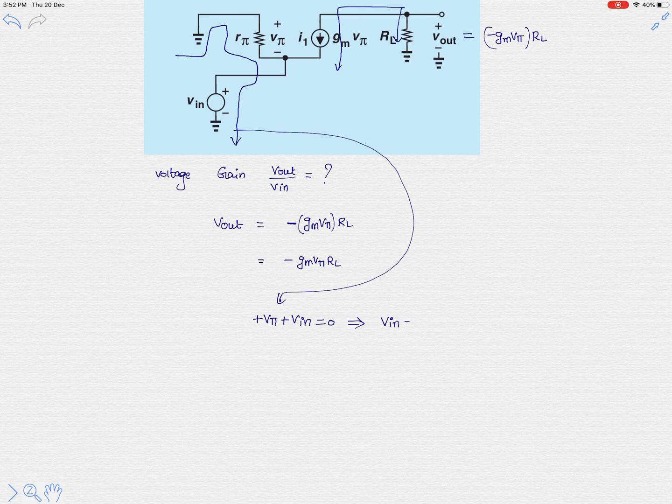In the above V output equation, we simply write that minus v phi is v in. Then we will get v in multiplied with gm multiplied with RL.